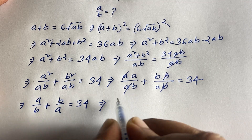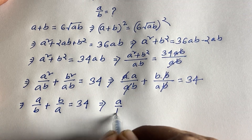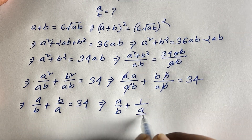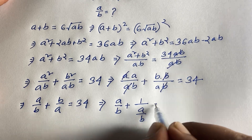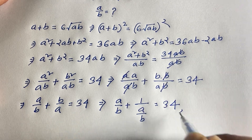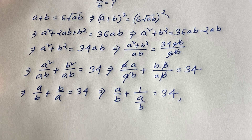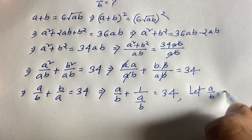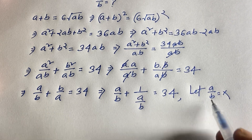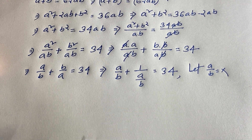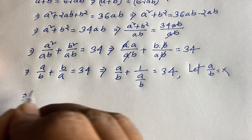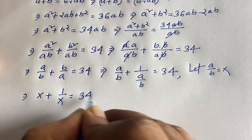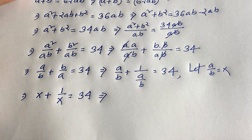This equation becomes a/b + 1/(a/b), which is b/a, equal to 34. Now let x equal a/b. So the equation becomes x + 1/x is equal to 34.